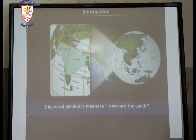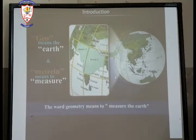The word geometry means to measure the earth. Geometry is made up of two words: Geo and Metrian. Geo means the earth and Metrian means to measure.